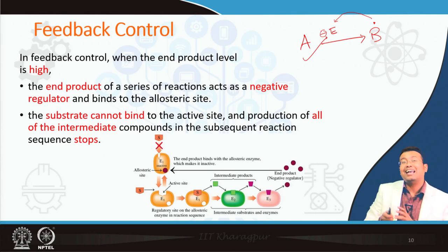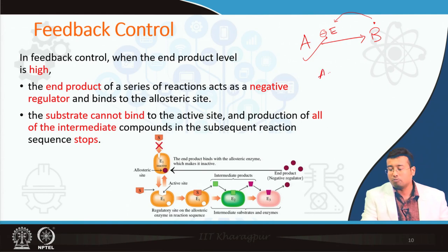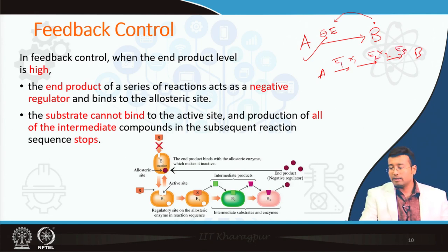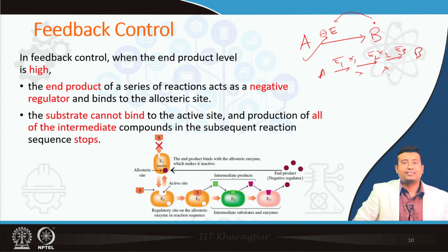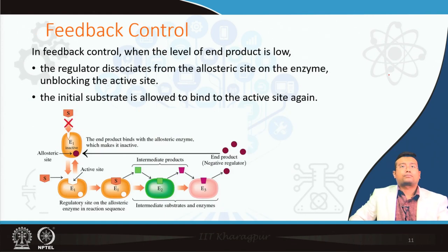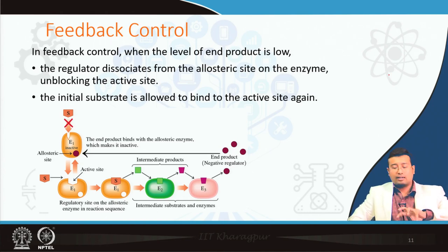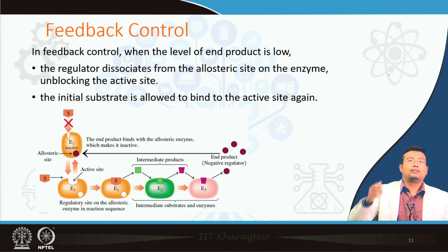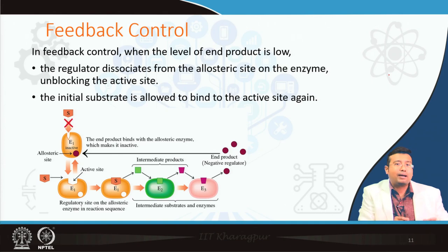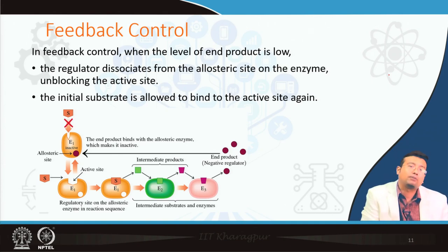In case of feedback inhibition, specifically end product inhibition, it inhibits the enzyme right at the start — at the beginning of the pathway. Since A may be getting converted to B via multiple steps through compounds X1, X2, and then B, the end product inhibits enzyme E1 at the start, so all the intermediate products will not be formed. When the end product level is very low, the allosteric regulator gives a positive feedback — the negative regulator dissociates from the allosteric site and the enzyme can bind to the substrate again and the reaction can proceed.